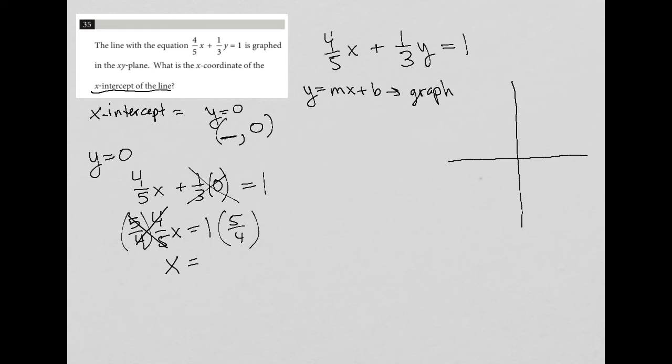And then 1 times 5/4 is 5/4. So that is the x value of the x-intercept, because that's the x term when y equals 0.